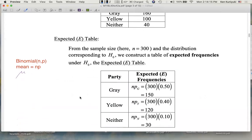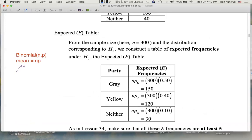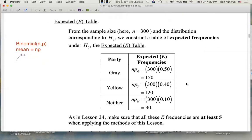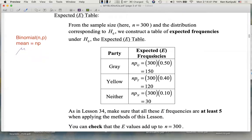From the sample size, here n equals 300, and the distribution corresponding to the null, because remember, we're basing calculations under the null. We're assuming that these are in fact the proportions today. So then, what would be the expected frequencies for the Gray, Yellow, and Neither party situations?